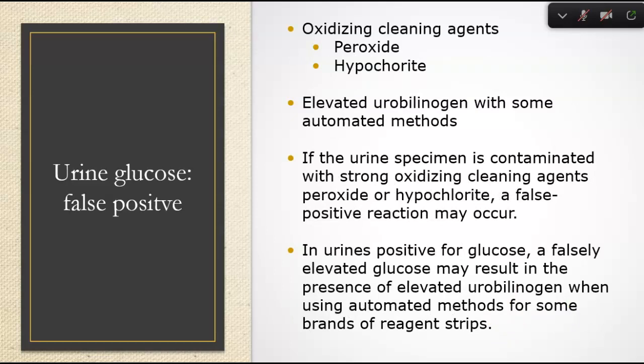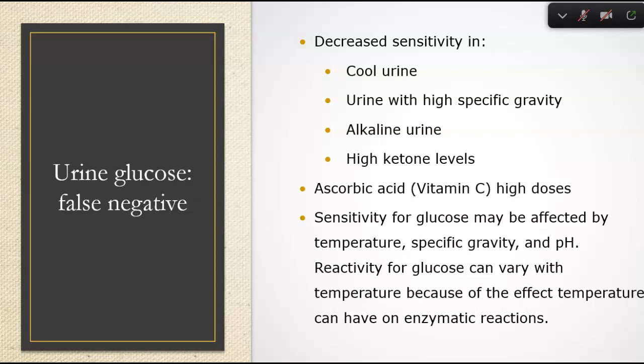False positives can come from oxidizing cleaning agents, peroxide, hypochlorite, elevated urobilinogen in some automated methods, or contamination with strong oxidizing agents. False negatives can occur with decreased sensitivity in cool urine — because it's cold and enzymes slow down — alkaline urine, high ketone levels, high specific gravity, or ascorbic acid in high doses. Normal vitamin C isn't a problem, but high doses can inhibit the enzymatic reaction. We should wait at least 24 hours after the last vitamin C intake for accurate results.